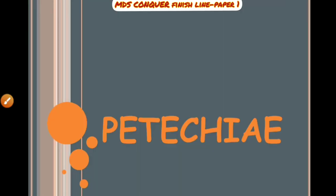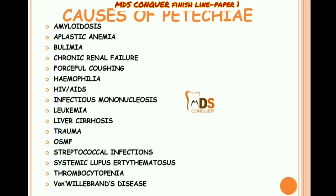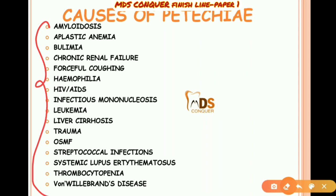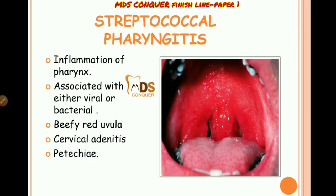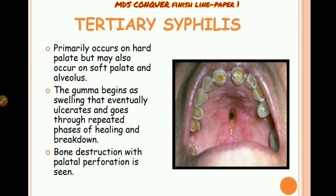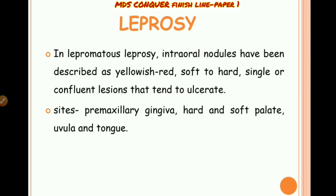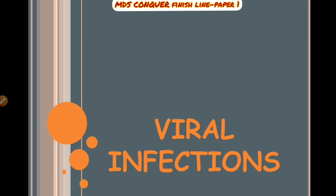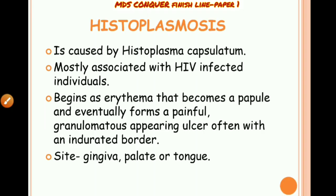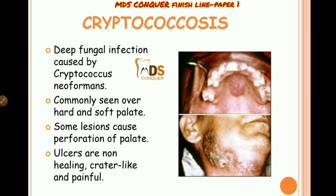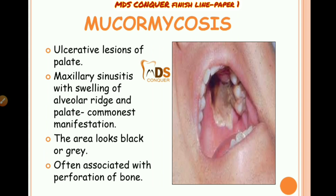Petechiae are most commonly seen on the palate from various causes. Bacterial infections affecting the palate include streptococcal pharyngitis, tertiary syphilis forming gumma, and leprosy. Viral infections include herpangina, mostly seen in children caused by Coxsackievirus, presenting with viral ulcerations on the palate.